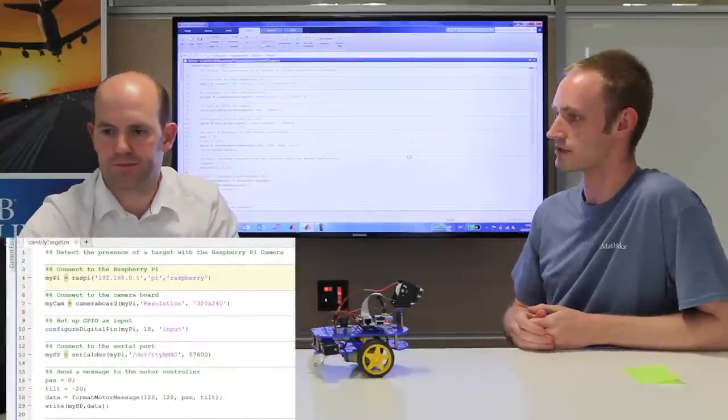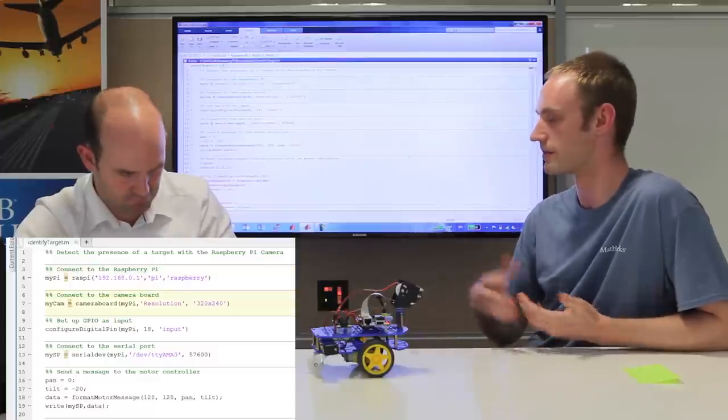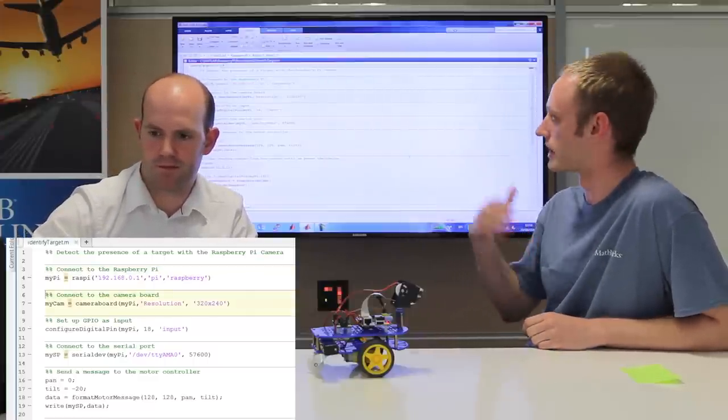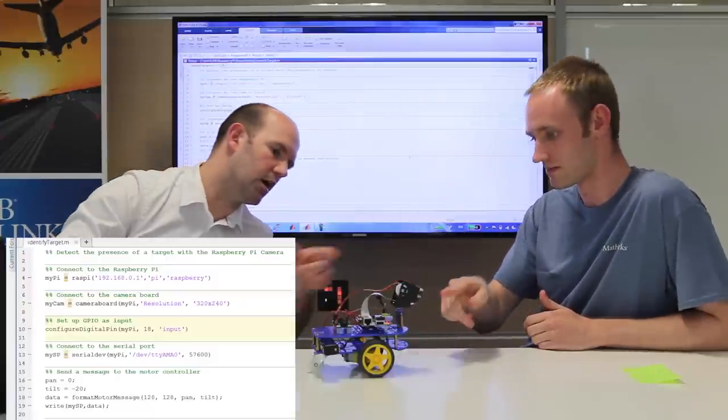that just creates a network connection now to the Raspberry Pi, so MATLAB now knows that the Raspberry Pi exists and we can start to do things with it. The next couple there just create a connection to the camera, and then... OK,